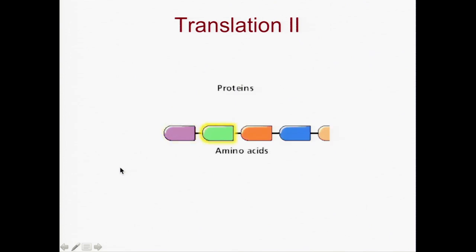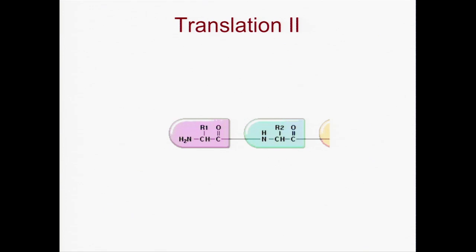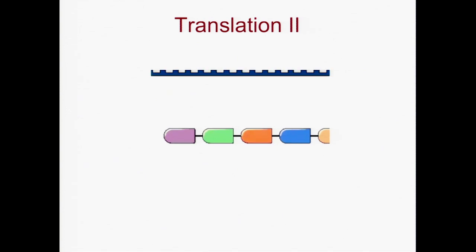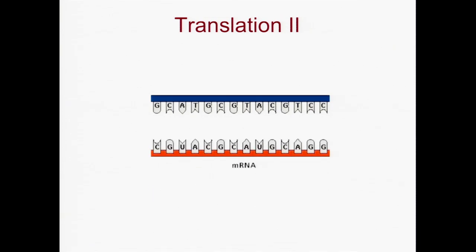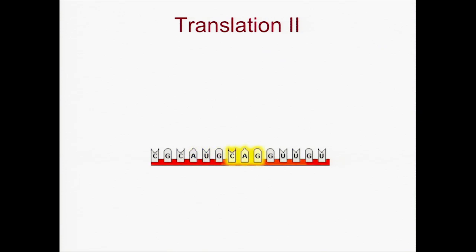Proteins are long chains of amino acids. There are 20 common kinds of amino acids, represented here by different colors. Each type of amino acid has a similar chemical structure except for a variable part known as the R group. Within a protein, amino acids are linked to each other by a peptide bond. The sequence of amino acids in a protein is coded in the sequence of bases in DNA. Therefore, translation — or protein synthesis — begins with the transcription of DNA into messenger RNA, or mRNA.